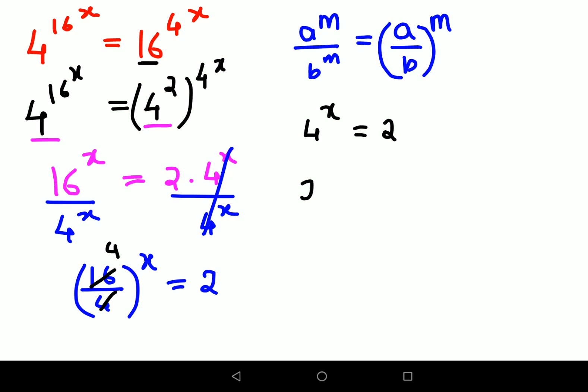Now again, 4 can be written as 2^2, the whole raised to x, equals 2. And we also know (a^m)^n can be written as a^(m·n). So this can be written as 2^(2x) = 2.